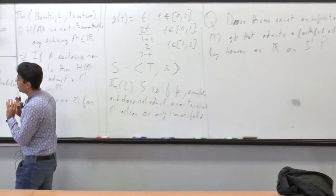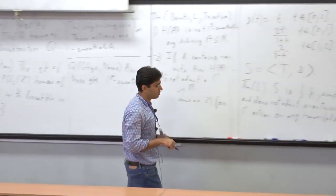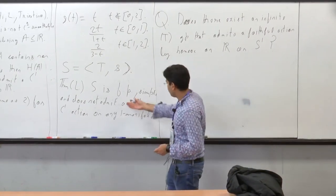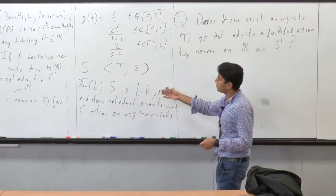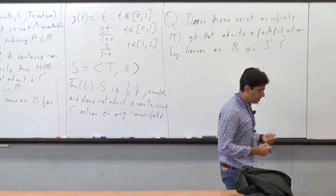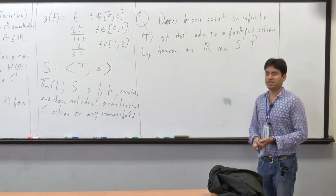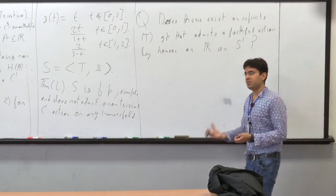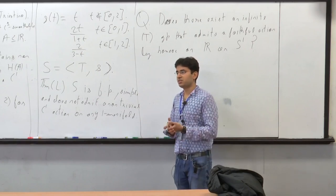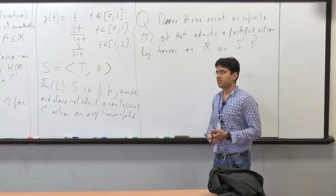These groups don't have property T because they all have infinite abelianization. However, you can consider groups that act on the circle — for instance, Thompson's group T, which is simple. You can construct cousins of this example, and you can even consider groups of piecewise projective homeomorphisms acting on the circle with infinitely many breakpoints. We call these countably singular piecewise projective homeomorphisms — outside a countable closed set in the circle, they are of the desired regularity, which is C∞.